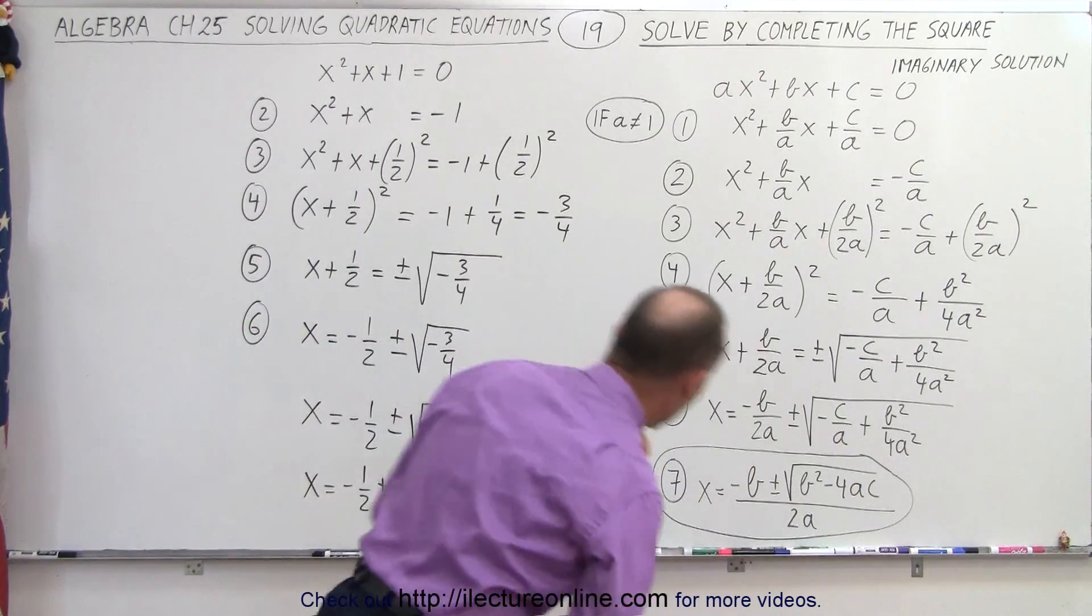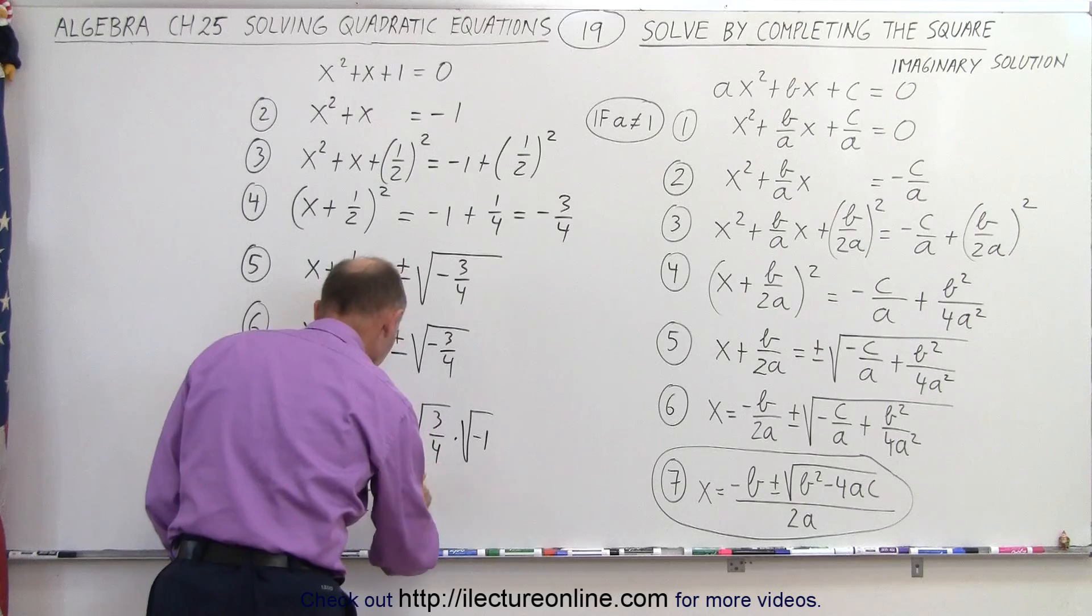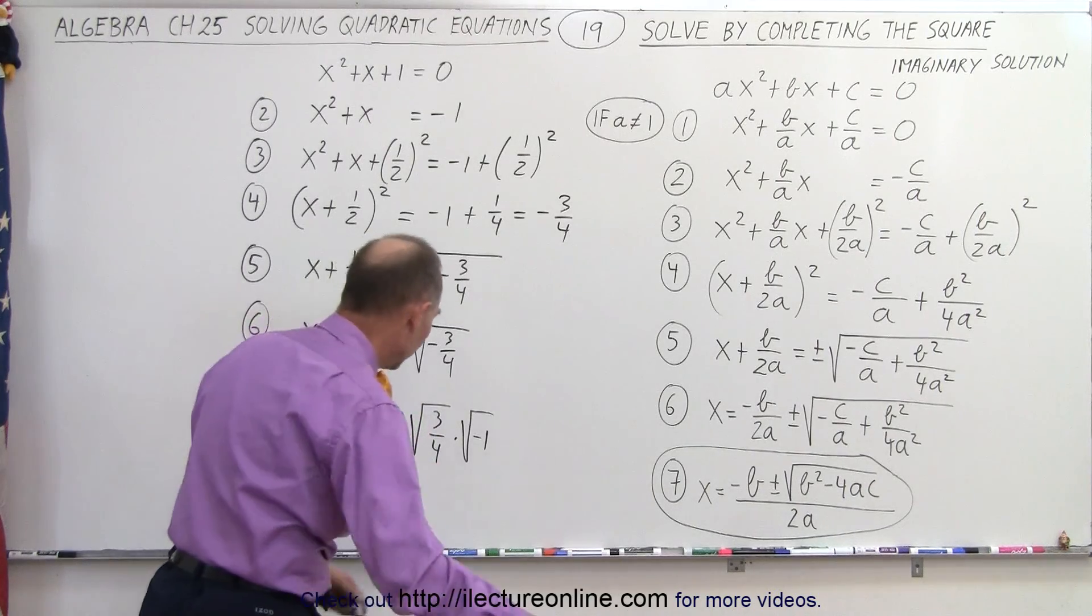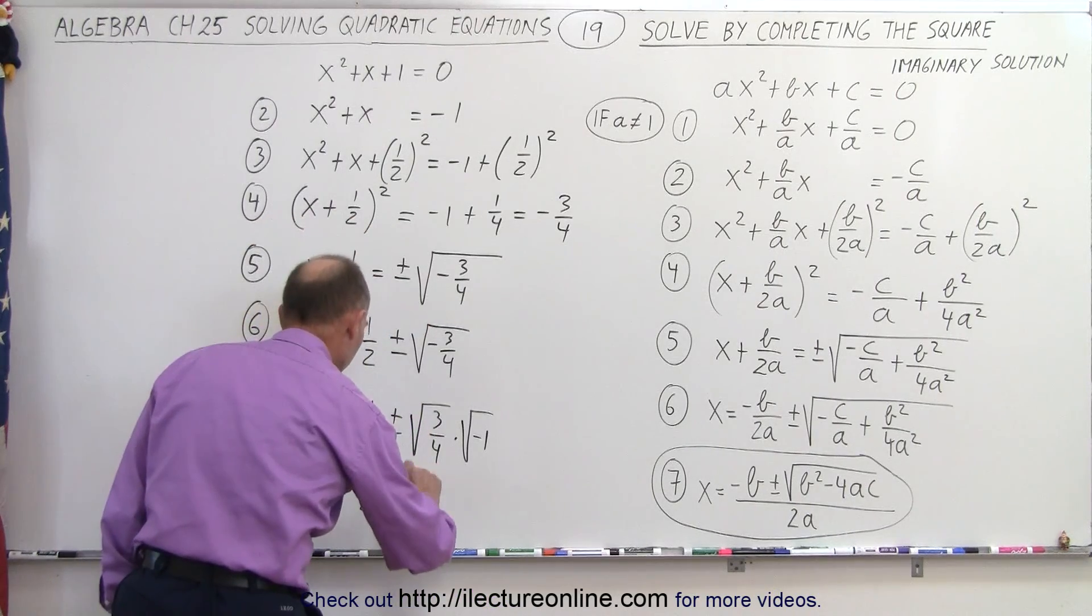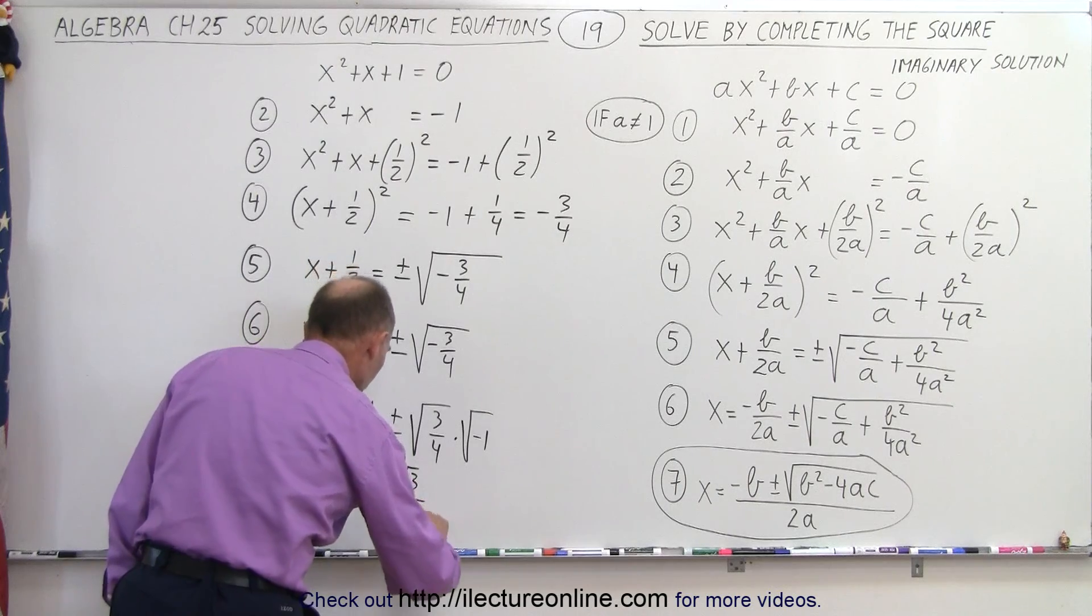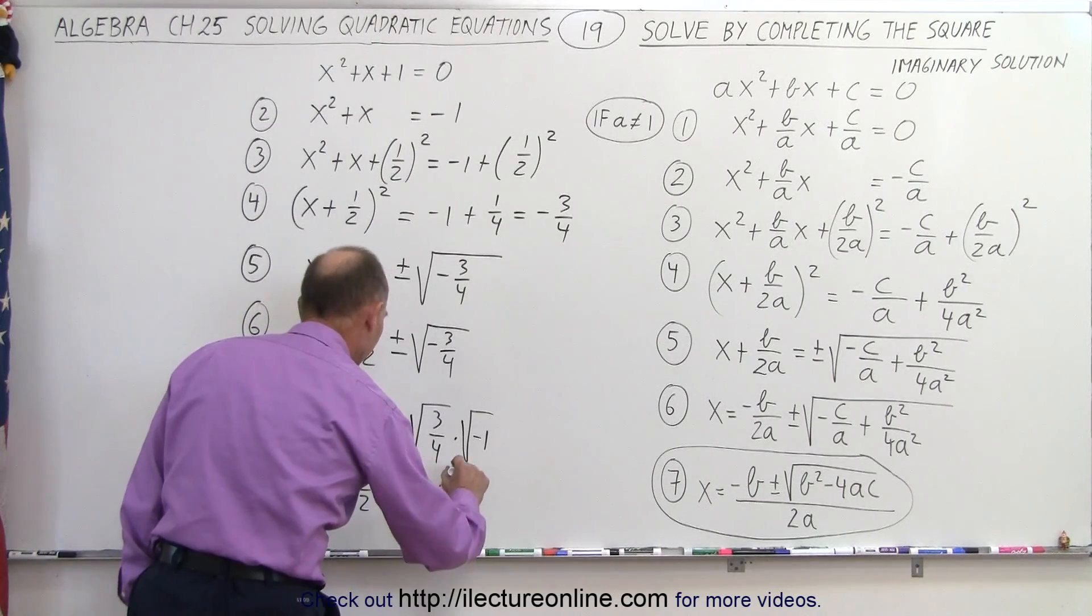Let's simplify that a little bit. We can take the square root of 4, so that's equal to the square root of 3 over 2, because the square root of 4 is equal to 2, times i.